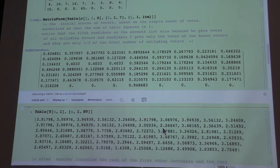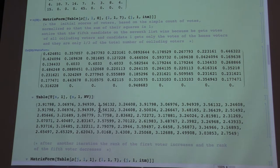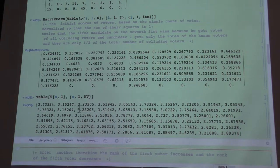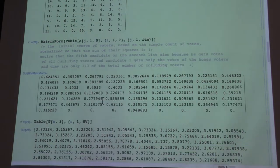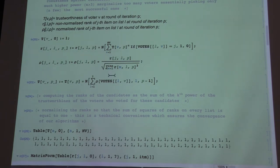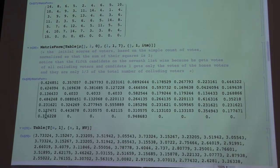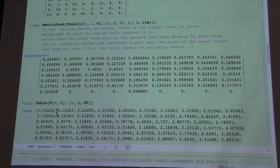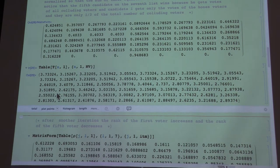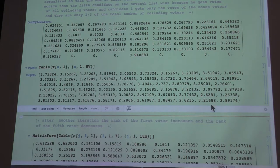But what we do now, since we have new ranks of objects, we can now compute the new trustworthiness of each voter. How do we compute the trustworthiness of each voter? Well, this is simply this formula. It's sum of rhos of all items that this voter has voted for. And you can see here, the honest voters are getting slightly higher trustworthiness than the polluting voters.